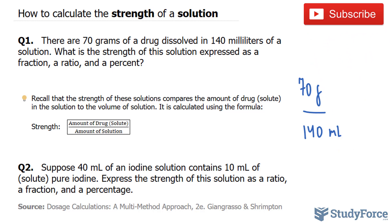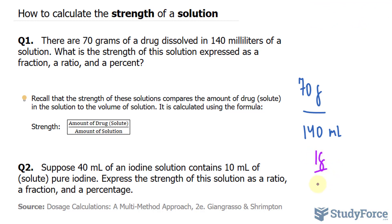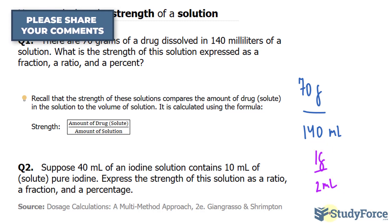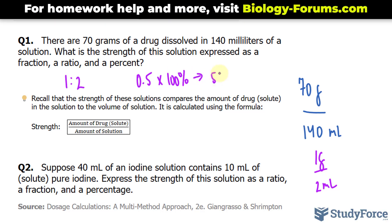At this point, you want to reduce these numbers. 70 divided by 140 is half, so we have 1 gram per every 2 milliliters of this solution. This is how you represent it as a fraction. As a ratio, you write it as 1 to 2, and as a percentage, 1 over 2 is 0.5, and multiplying that by 100% gives us 50%.